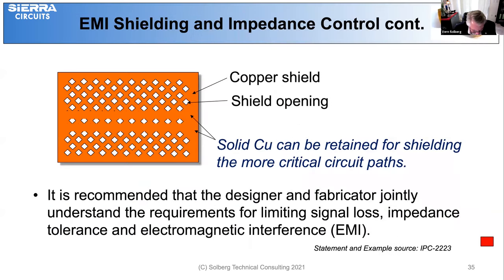The crosshatch technique has the least negative effect on loss, but results in the most degradation of EMI performance, especially at high frequencies. IPC 2223 suggests that sharp corners on signal routing should be avoided because they are potential points of failure when the material bends. Small openings in the crosshatch plane will offer improved impedance consistency, and it is recommended that the designer and fabricator jointly understand the requirements for limiting signal loss, impedance tolerance, and electromagnetic interference.